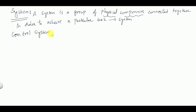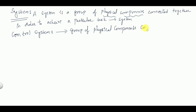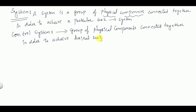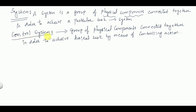A control system is a group of physical components connected together in order to achieve a desired task by means of some controlling action. That type of system is said to be a control system.